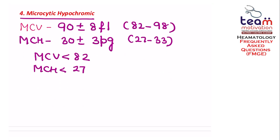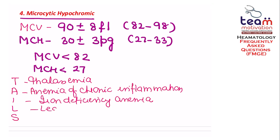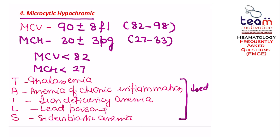Microcytic hypochromic picture is seen in iron deficiency anemia, and you can remember all conditions using the mnemonic TAILS: T for thalassemia, A for anemia of chronic inflammation, I for iron deficiency anemia, L for lead poisoning, and S for sideroblastic anemia. In the last four conditions, there is decreased reticulocyte count, but in thalassemia there is increased reticulocyte count.